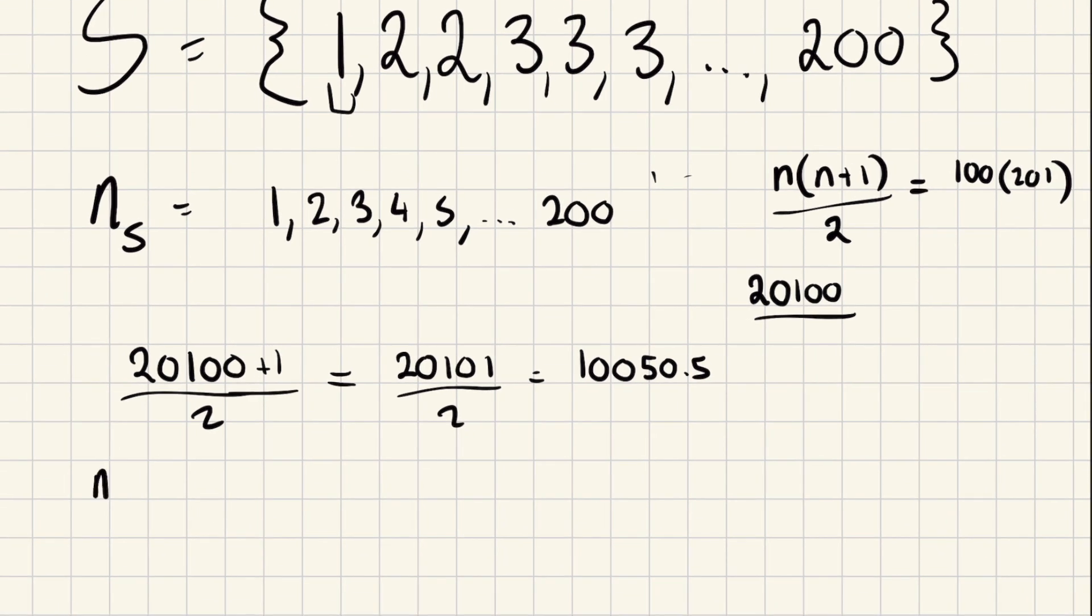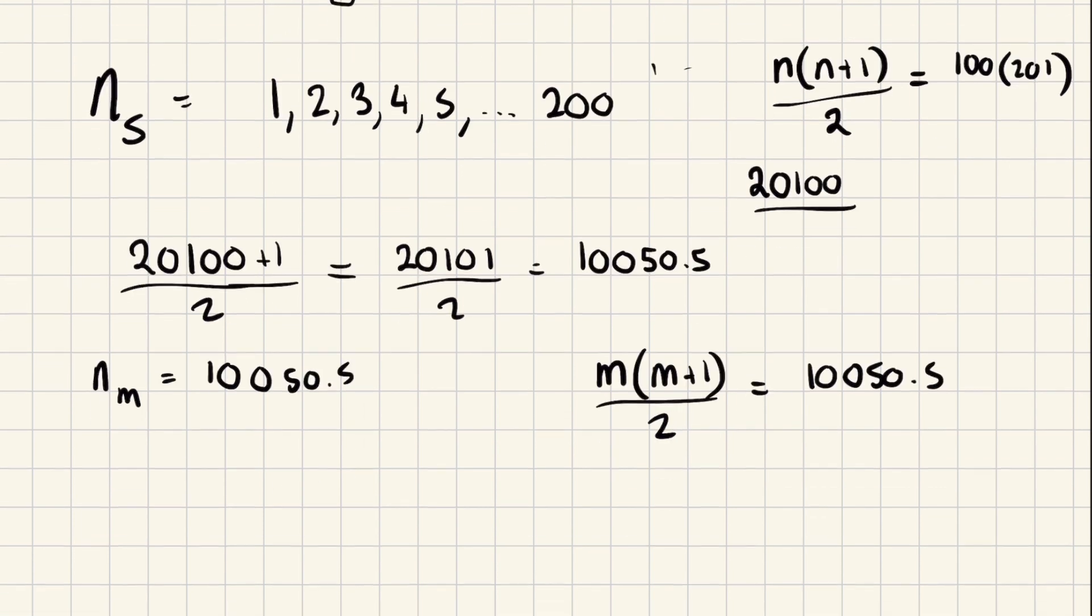So now that we know that the median element, like nm, is going to be the 10,050.5 one, we can actually put this back into the formula. Now I really recommend that you have a think as to why this is, but we're going to have m times m plus one over two equals 10,050.5. We've basically got another sum that's just going to come up halfway. What we do is multiply both sides by that, and what we get is our original number out.